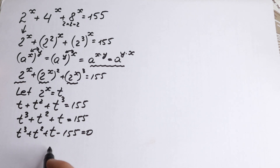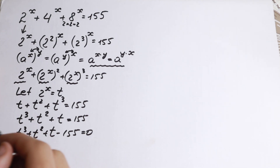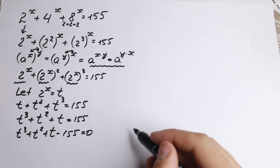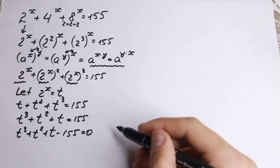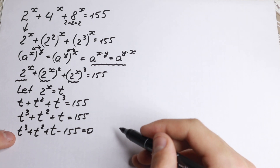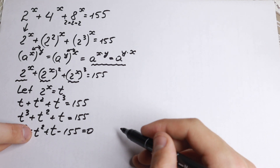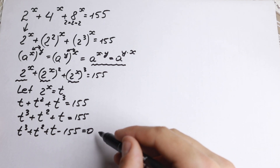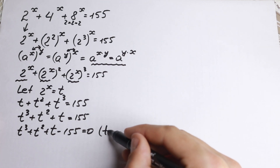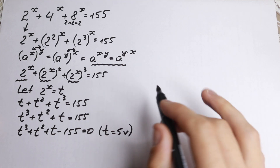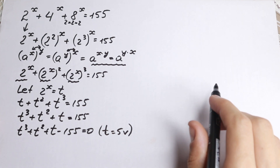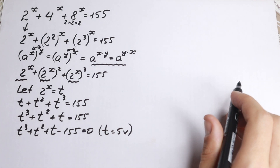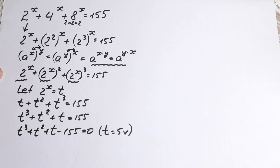Now we have a cubic equation and need to solve it. There are many methods, but I want to show my approach. By inspection, if we plug in t equals 5, we get 125 plus 25 plus 5, which equals 155. So t equals 5 is a solution.